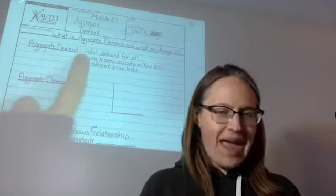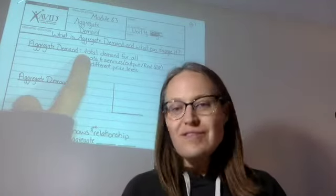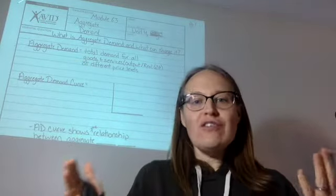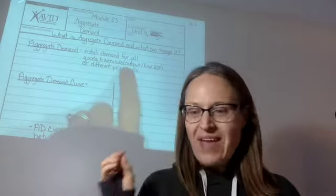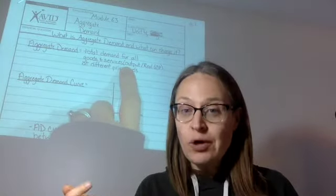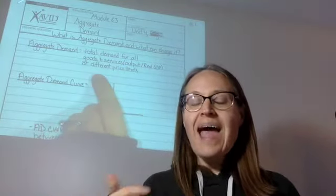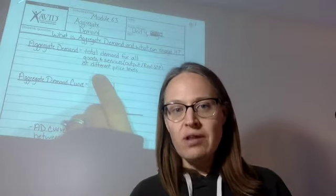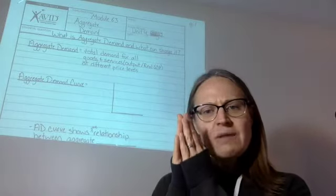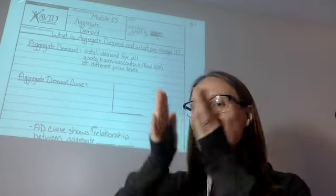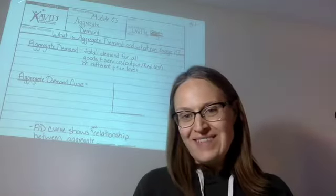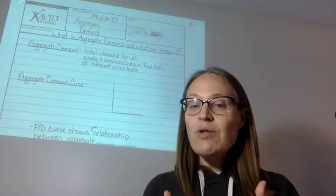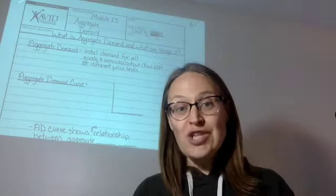So the aggregate demand is the total demand for all goods and services—and remember that goods and services means output or real GDP—at the different price levels. We're not talking about the demand for a certain type of good. We're talking about the demand for all of the goods in the entire economy. We're talking about the demand for real GDP.